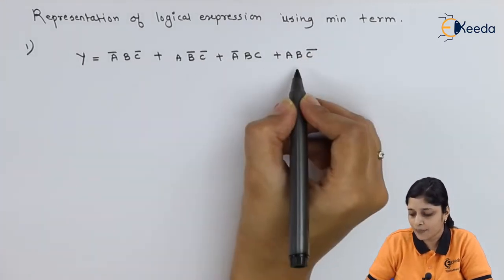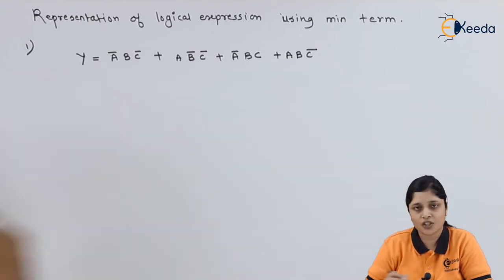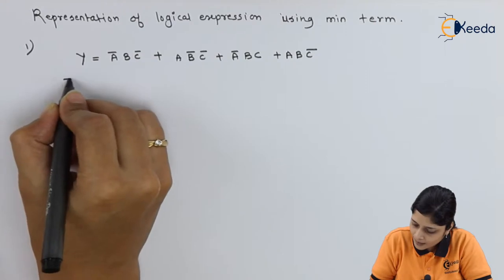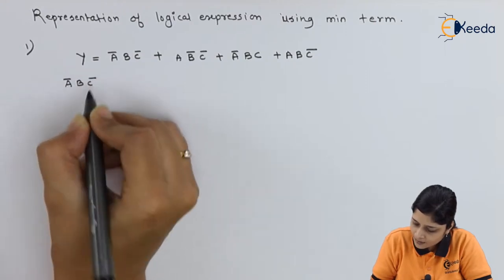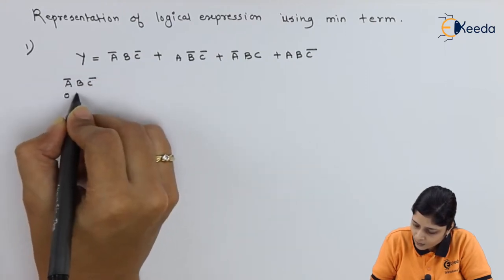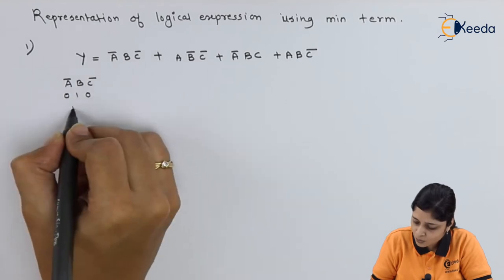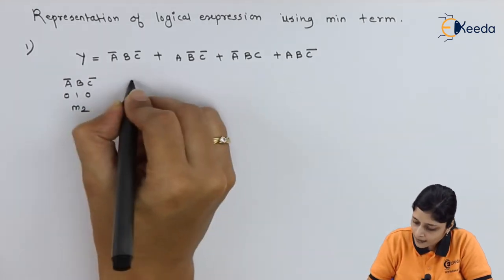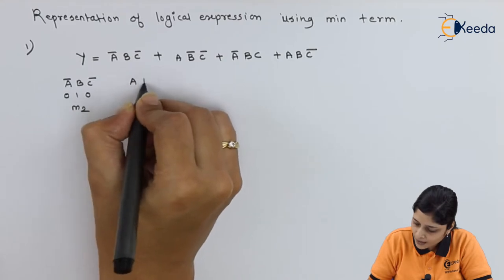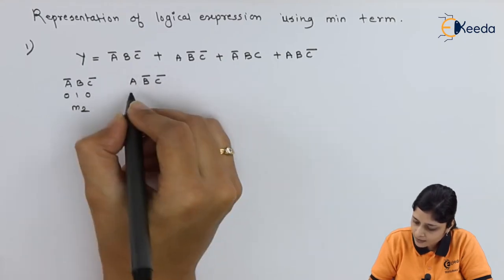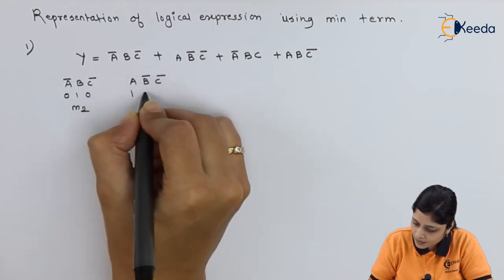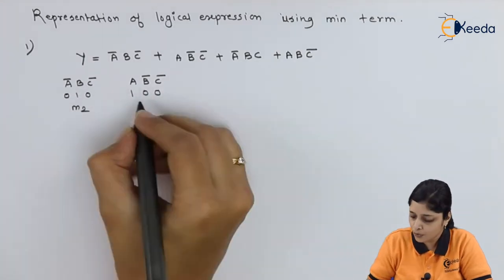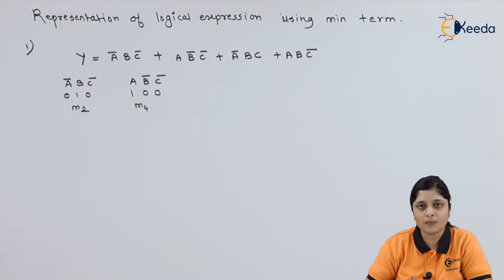You have to calculate separately the minterms for each term. First, we take ā·b·c̄ — you write 0 1 0, which is 2, so the minterm you get is m2. Then for a·b̄·c̄ you write 1 0 0, which is the binary for 4, so you write m4.